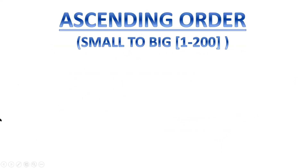Let's start ascending order. Always remember: ascending order starts with A — small to big, from small number to big number. We are giving numbers only from 1 to 200. Ascending order means arrange the numbers from small to big.